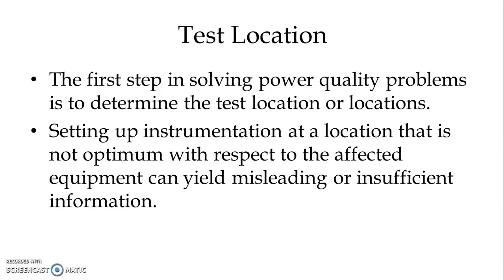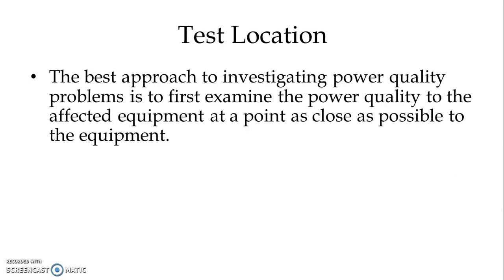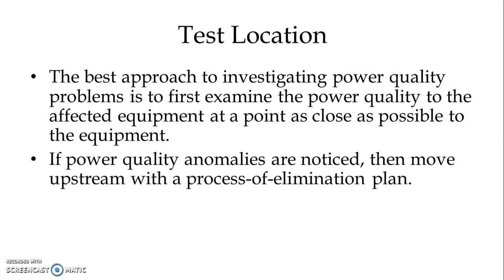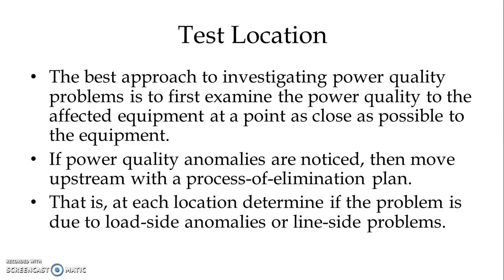Even the best available power quality instrumentation is only as good as the personnel using it. The best approach to investigating power quality problems is to first examine the power quality to the affected equipment at a point as close as possible to the equipment. If power quality anomalies are noticed, then move upstream with the process of elimination plan — at each location, determine if the problem is due to load side anomalies or line side problems.